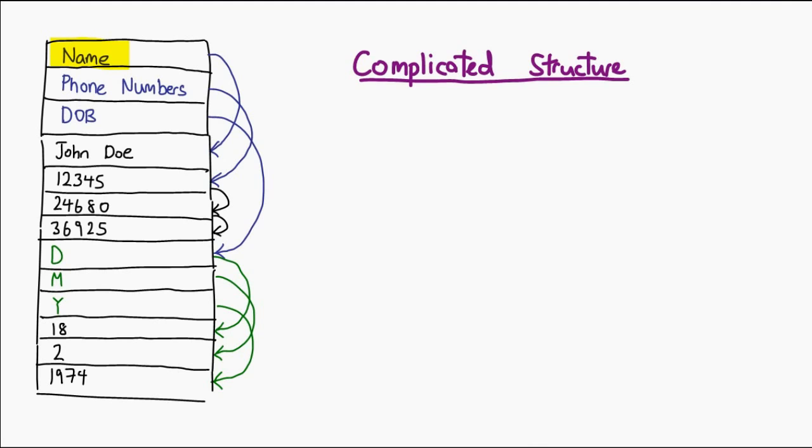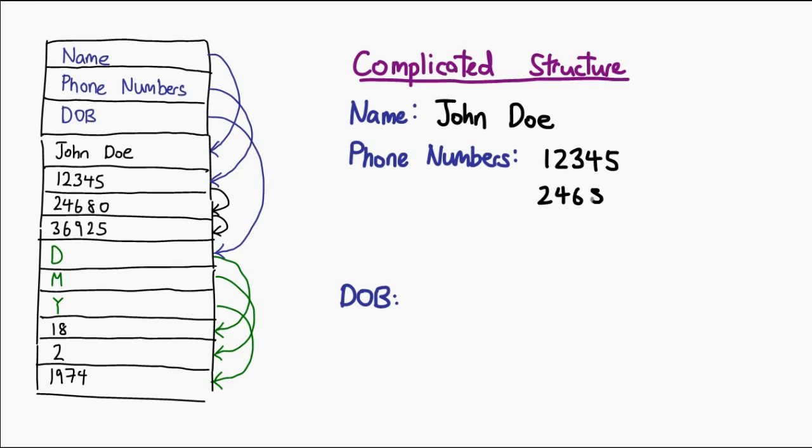By first inspecting these three lines, we know that our data structure has three main fields. The first field links us to a name, so we simply fill it in. The second field links us to a number. However, this number is part of a greater collection. Therefore, we have to trace this to completion and note it all down as values belonging to the phone numbers field.